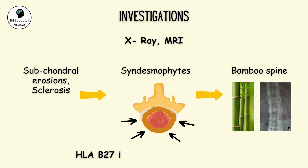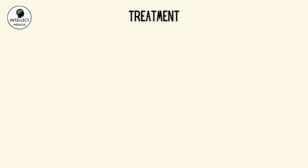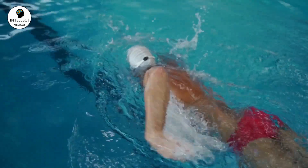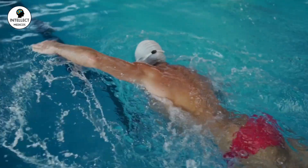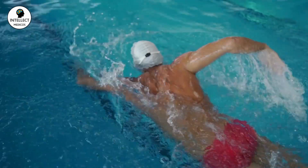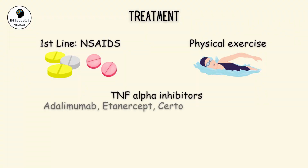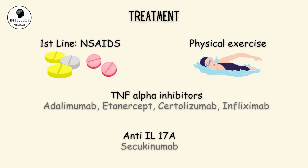HLA-B27 is negative in a minority of patients. For treatment, non-steroidal anti-inflammatory drugs are used as first line to relieve symptoms, but you should encourage regular exercise, especially swimming. In cases where this is insufficient, biological disease-modifying agents can be used such as tumor necrosis factor alpha inhibitors. If there is no response, we can try interleukin inhibitors.